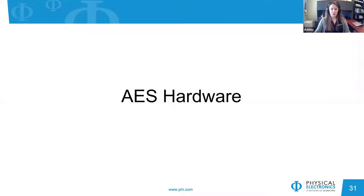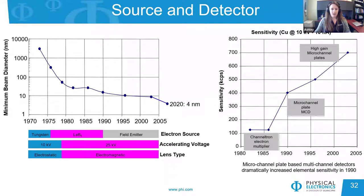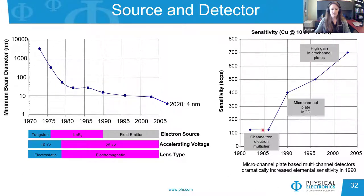We will now discuss the hardware components present in an AES instrument, starting with electron source and detector hardware. Since its early inception, AES has undergone several major hardware advancements. In the early days, a tungsten filament was used, which allowed the beam to be focused to down to a micron or so. The introduction of the LaB6 filament reduced the beam size to about 100 nanometers or less. Today, we use a Schottky thermal field emission electron source with a current beam size specification of about 4 nanometers. Detector hardware has also evolved; we now use high-gain microchannel plate detectors, which offer much higher sensitivities than their channeltron predecessors.